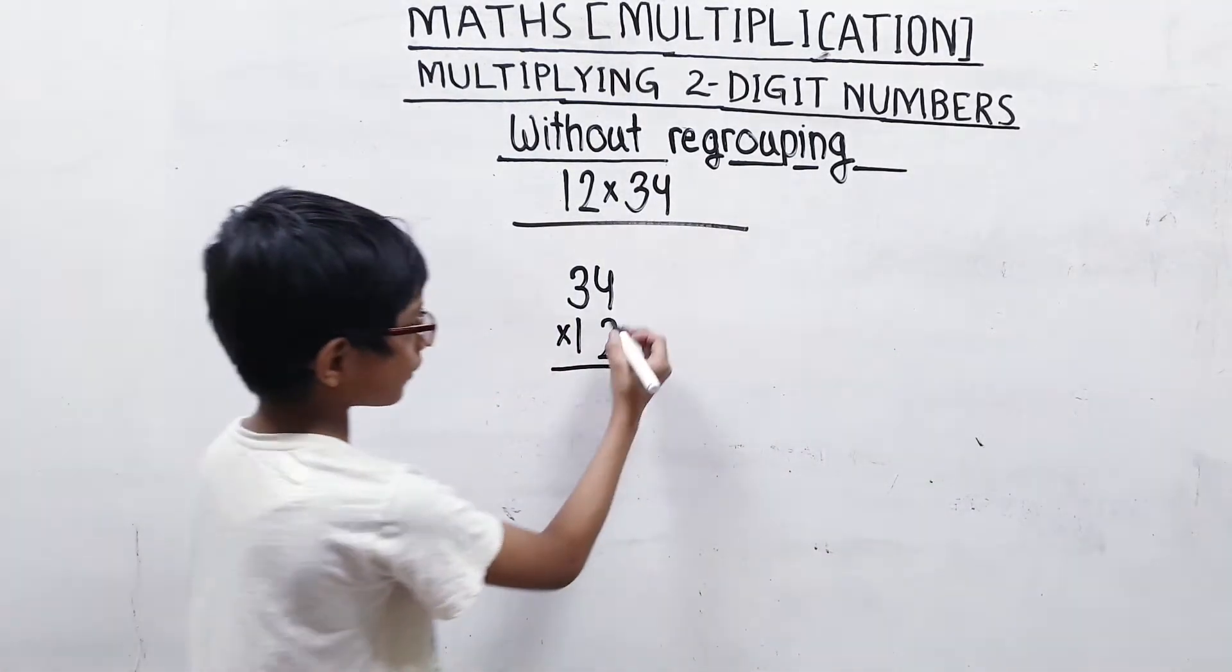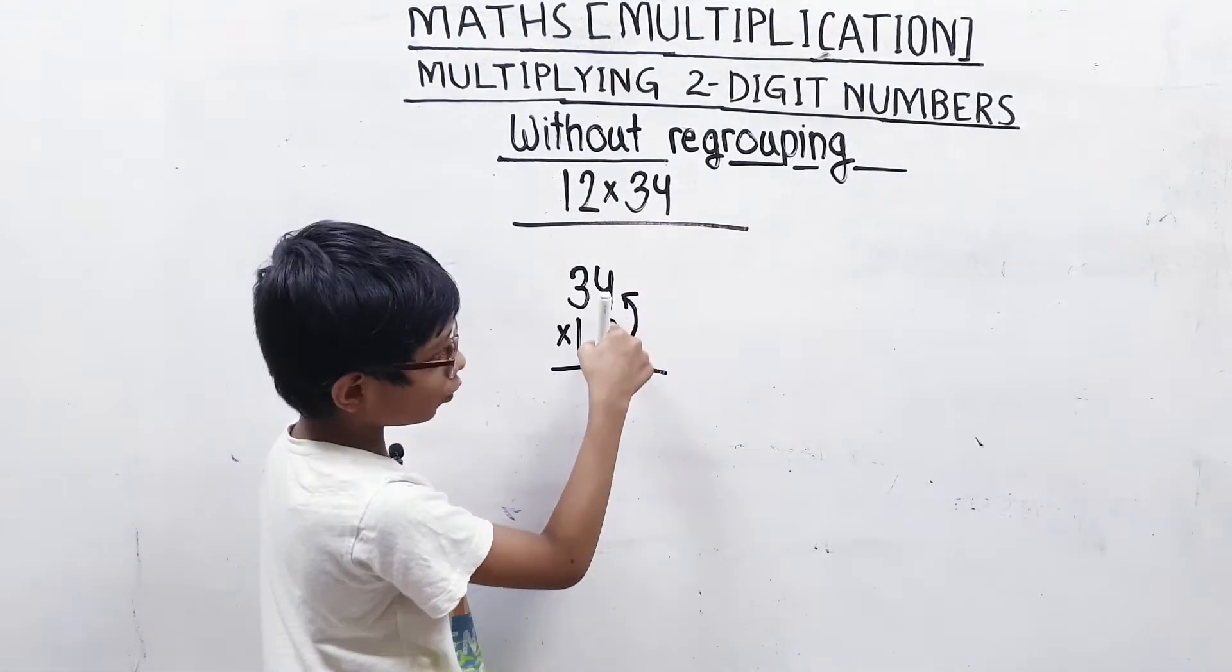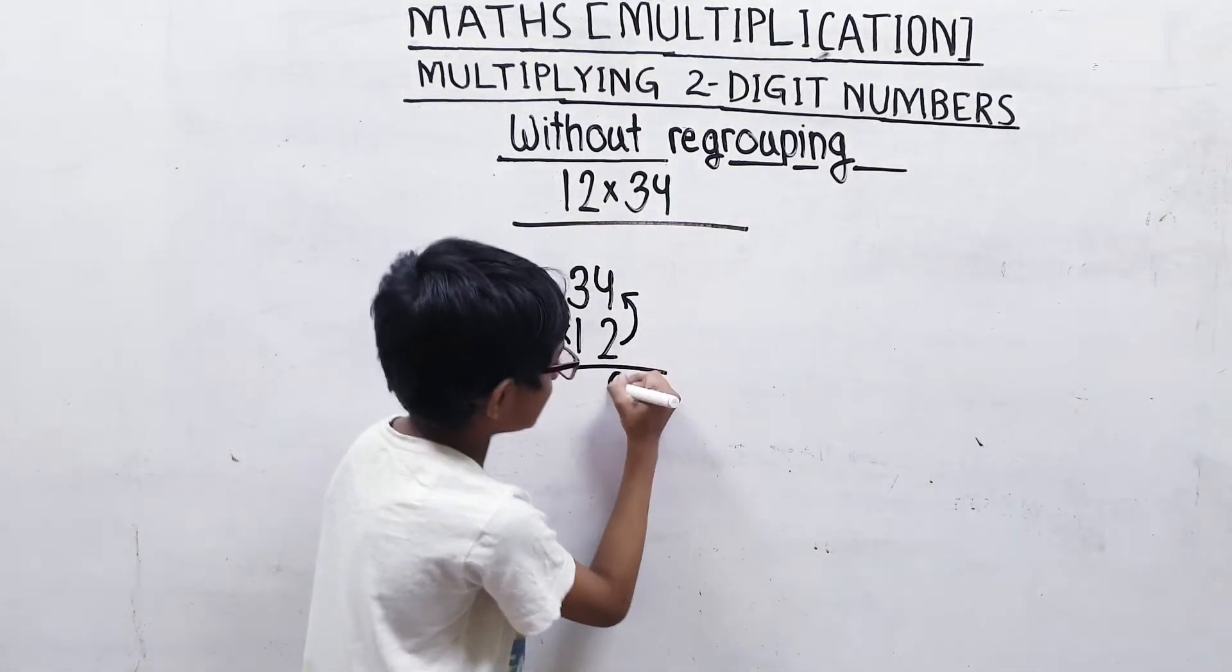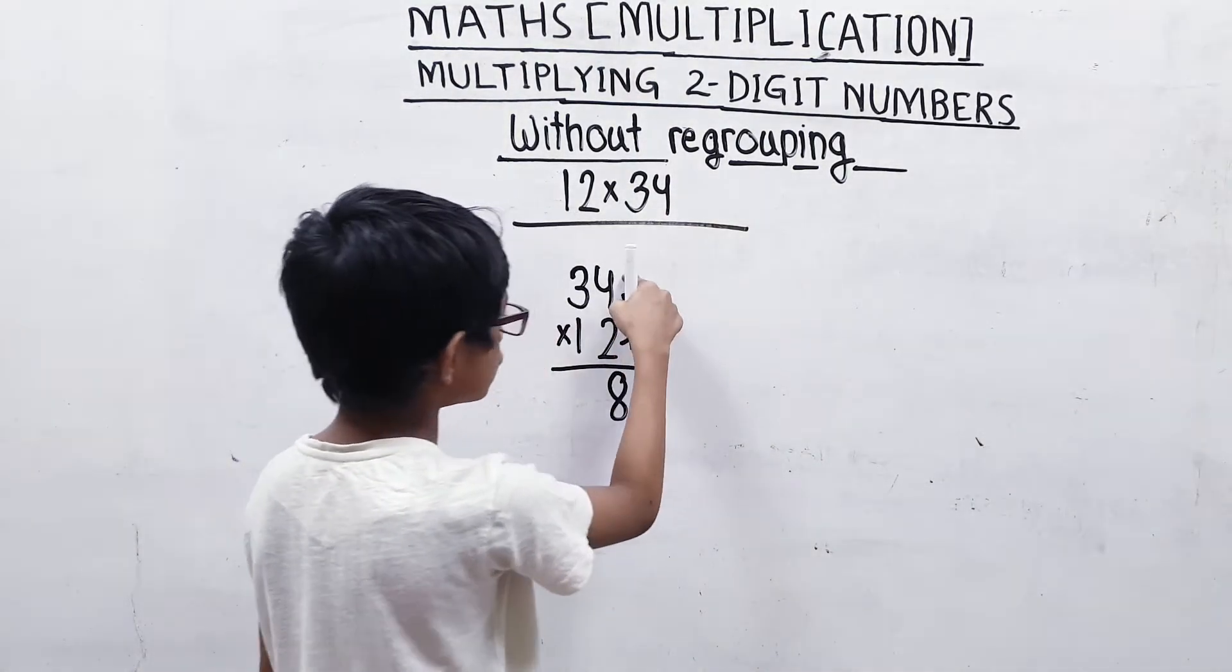First, what we will do? We will multiply 4 by 2. 4 times 2 is 8. Here we will write 8.